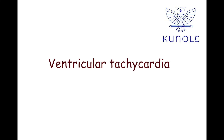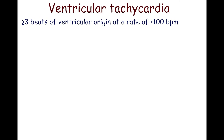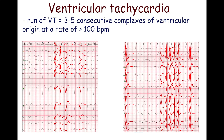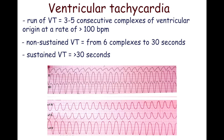In this video we will speak about ventricular tachycardia. Ventricular tachycardia is defined as 3 or more beats of ventricular origin at a rate of more than 100 beats per minute. From 3 to 5 consecutive complexes of ventricular origin is often called a run of ventricular tachycardia. Ventricular tachycardia is considered sustained if it lasts more than 30 seconds.